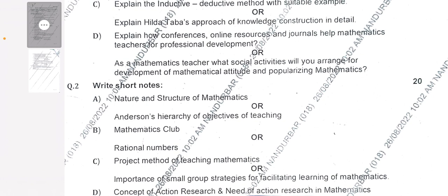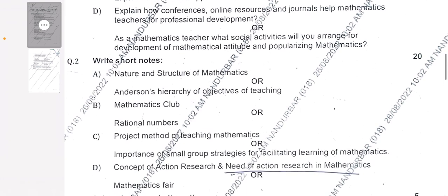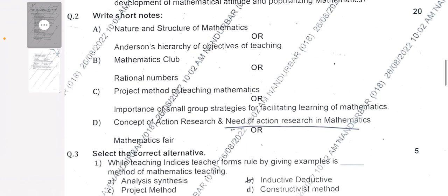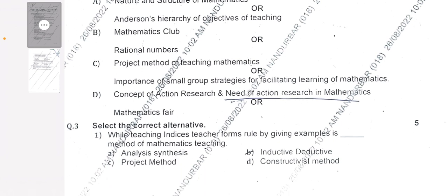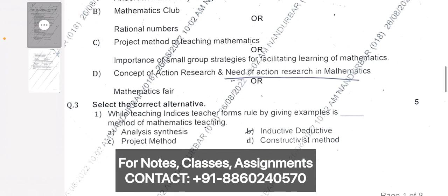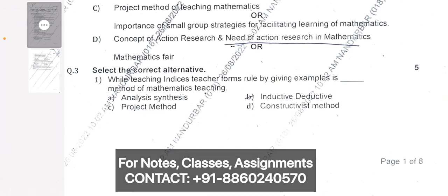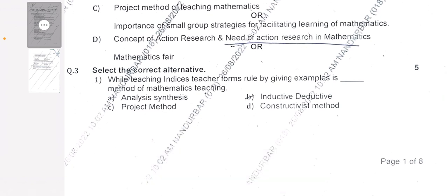Coming to Question Number 2: write short notes on the following. Part A: nature and structure of mathematics, or Henderson's hierarchy of objectives of teaching. Part B: mathematics club, or rational numbers. Part C: project method of teaching mathematics, or importance of small group strategies for facilitating learning of mathematics. Part D: concept of action research and need of action research in mathematics, or mathematical affairs.